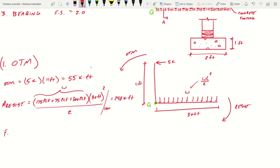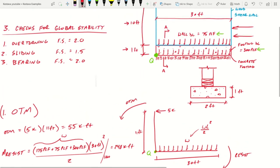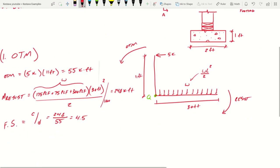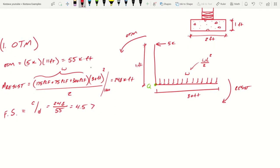Now we need to check our factor of safety. Factor of safety is equal to capacity over demand. Our capacity is our resisting moment, so 248 over demand which is 55. That gets us 4.5. And like I said up above, the factors of safety in general practice, you want to make sure you're greater than 2.0 factor of safety. We're at 4.5 which is greater than 2.0, so we're okay. So that's good.